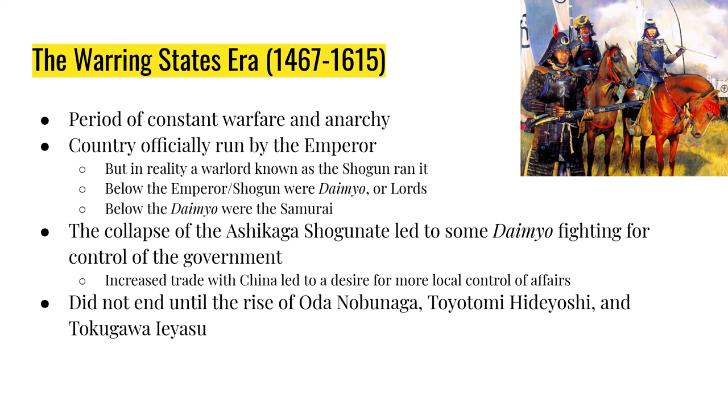In the beginning of the Warring States Era, the Shogun at the time was part of the Ashikaga Shogunate. The Shogun during the Ashikaga Shogunate never got control of all the daimyo, and some of these daimyo would occasionally fight against the government. By the 1460s, the Ashikaga Shogunate is collapsing and more people are willing to fight for control of the country. At the same time, there's increased trade with China and a greater desire for local autonomy.